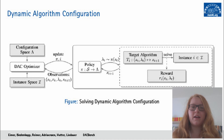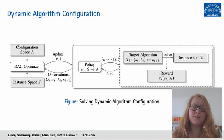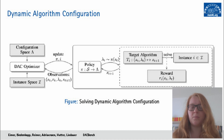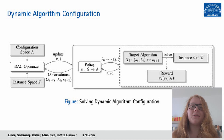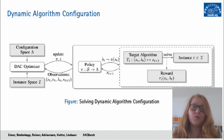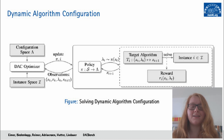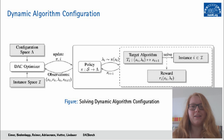The DAC solver is supplied with a configuration space as well as the instance space, just as we know from per-instance algorithm configuration. But then at each step it updates the policy and in turn receives information about the previous and current updated internal state, the reward, as well as the hyperparameter that was chosen.